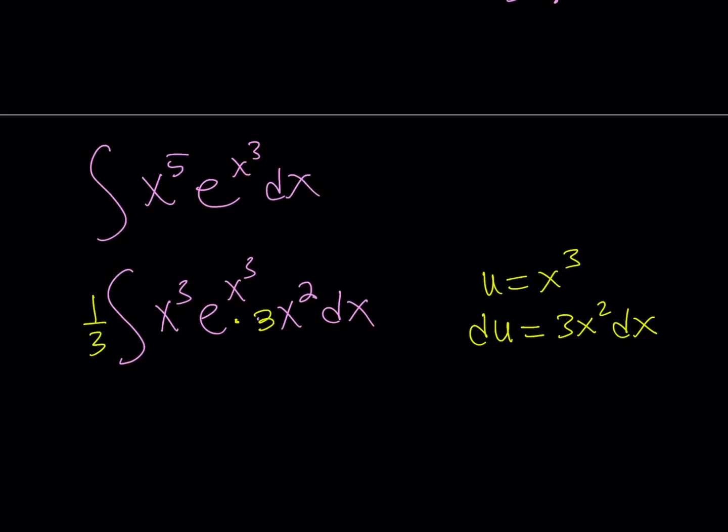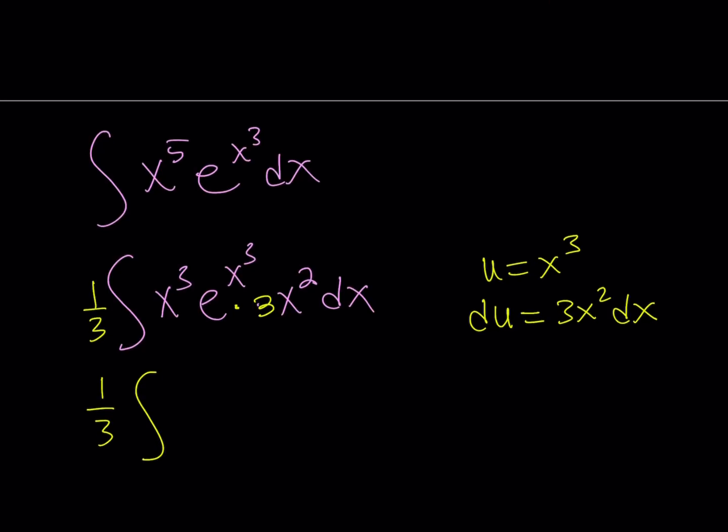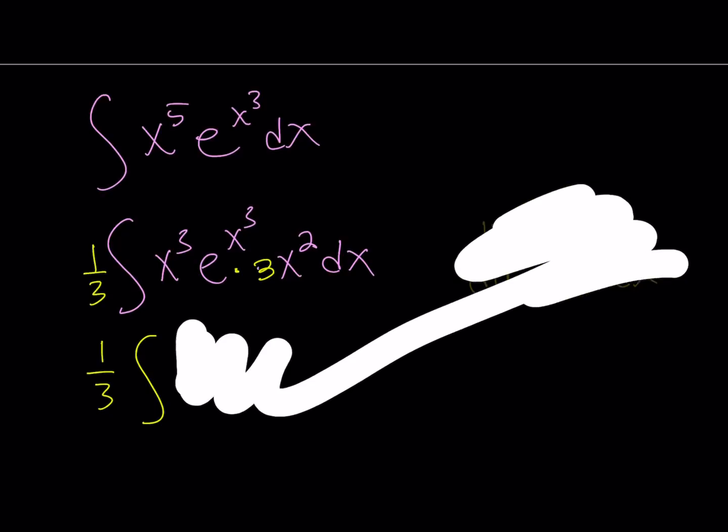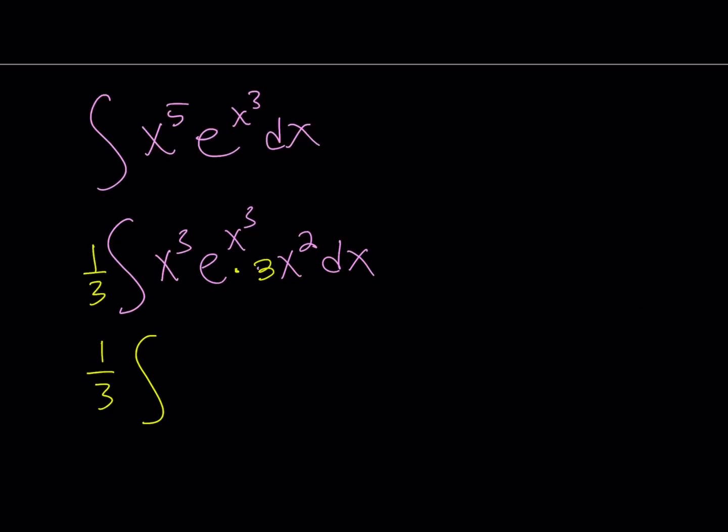Now, we have pretty much everything we need. Let's use a different variable, y. Y equals x cubed. Dy is 3x squared dx. So then, x cubed is going to be replaced with y. Then we have e to the power y and dy. Great.